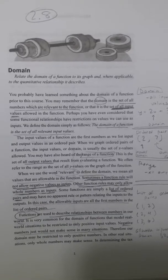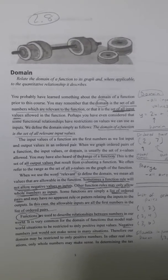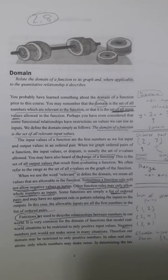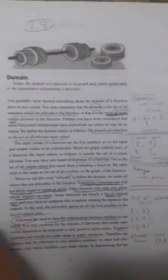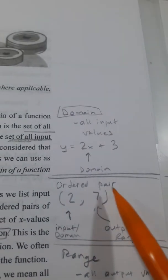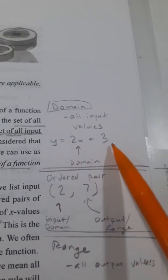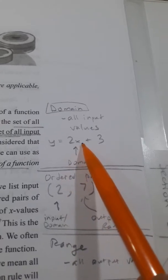So domain is basically the set of numbers which are relevant to the function. What that means is the set of all input values. So here we have an example function. y equals 2x plus 3. The domain is the input values.